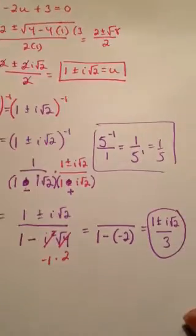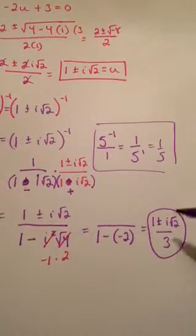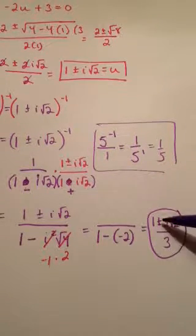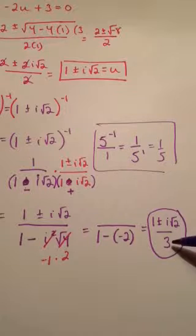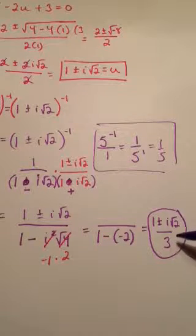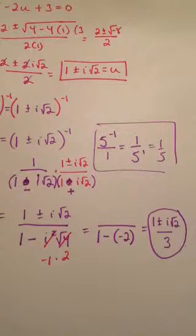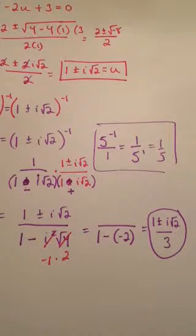In the back of the book, your book separates this into 1 third plus or minus i root 2 over 3. But actually, it's more proper form to keep it over just one single denominator — so this is a neater answer than the back of the book, actually.